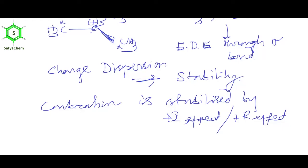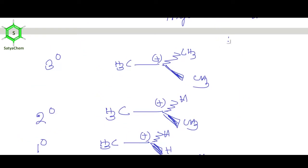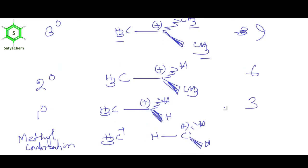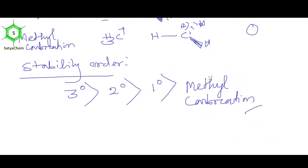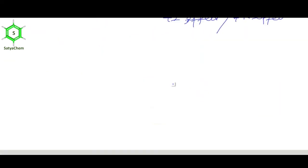The same conclusion can be drawn from hyperconjugation. In 3° carbocation, number of hyperconjugative hydrogens is 9; in 2°, it is 6; in 1°, 3; in methyl carbocation, 0. Higher the number of hyperconjugative hydrogens, higher the stability — so 3° > 2° > 1° > methyl. Groups with +R effect also stabilize carbocations. OH group has +R effect (though minus I, the R effect predominates). The positive charge gets dispersed over the system through the R effect.